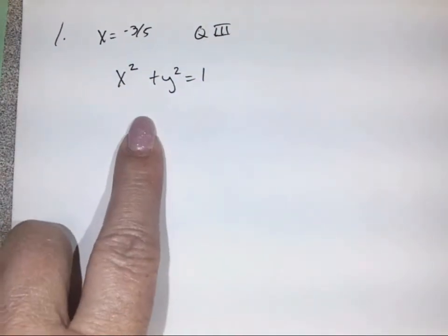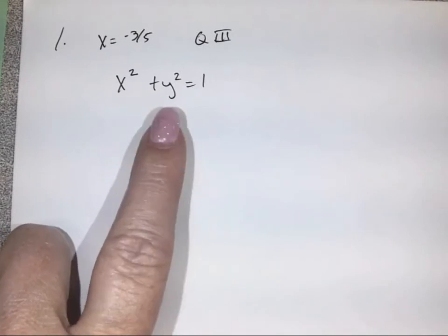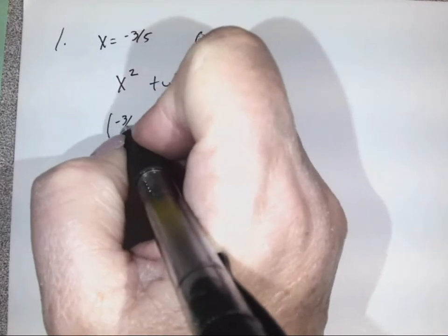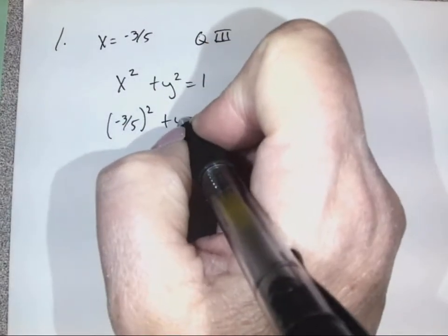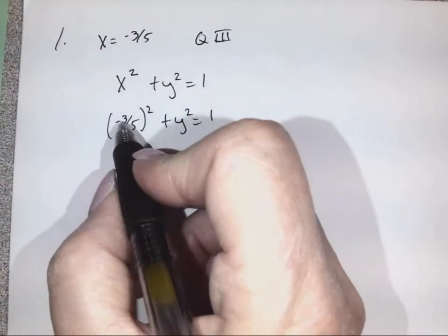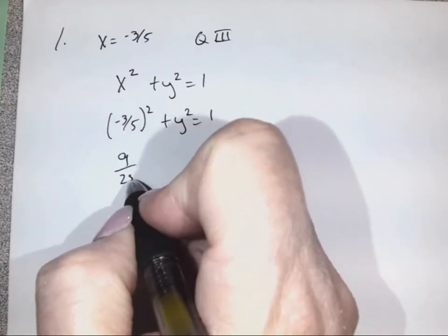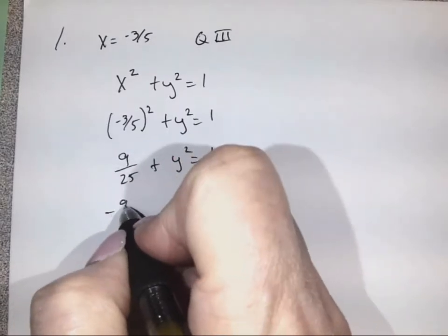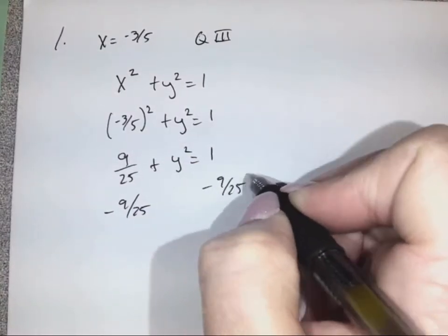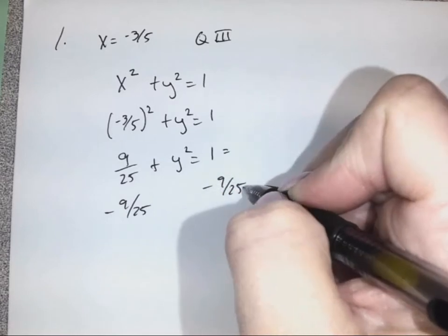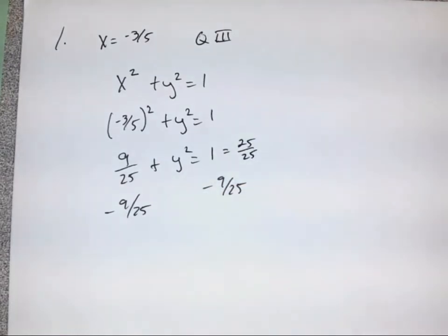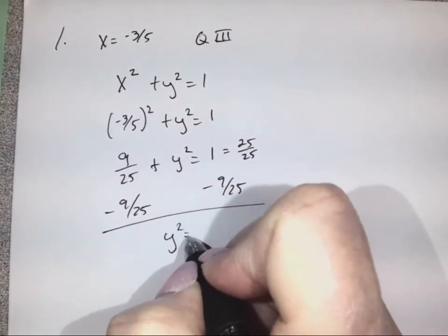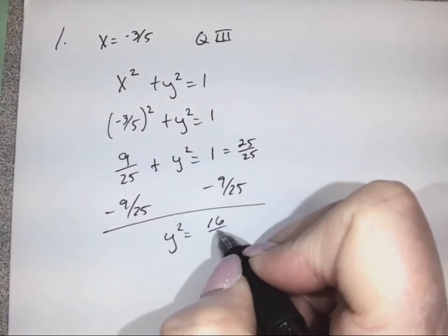When it's on the unit circle, the origin is (0, 0), and so that's why we just have X squared plus Y squared. So, negative 3 fifths squared plus Y squared is equal to 1. Squaring this, we end up with 9 over 25 plus Y squared is equal to 1. We'll subtract that from both sides, and let's make our 1 equal to our denominator — 25 over 25 — to subtract it. So Y squared is equal to 16 over 25.